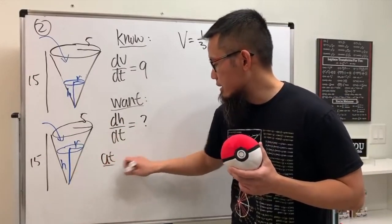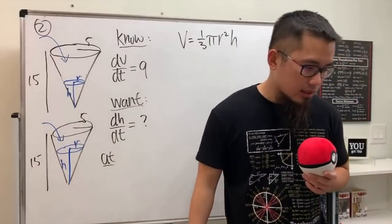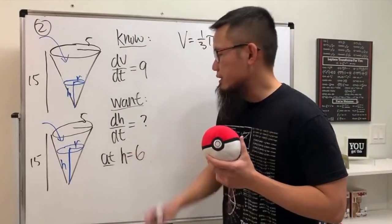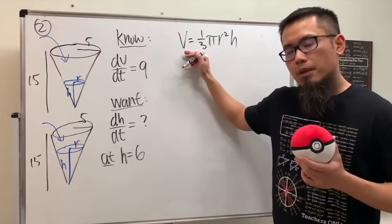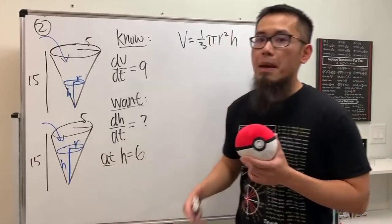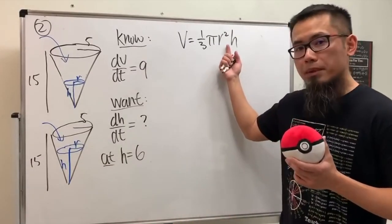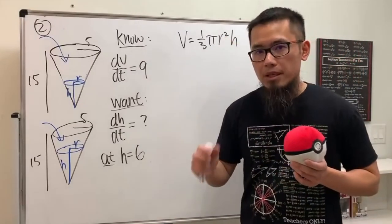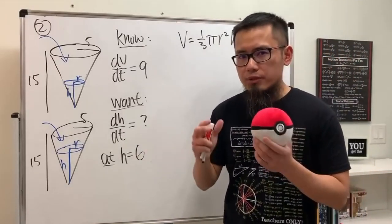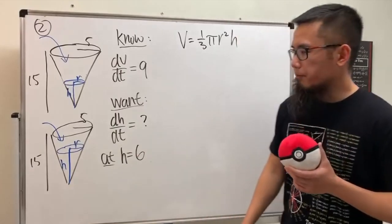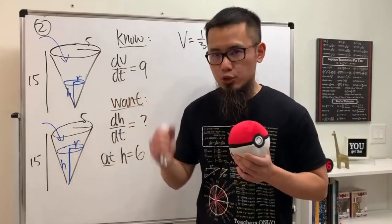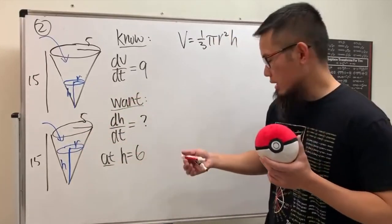We want dh/dt at the instance when the water is 6 feet deep, so when h = 6. We could differentiate directly using the product rule on r and h, but we can simplify by using similar triangles to eliminate one variable. That's the typical approach for cone problems, even though the product rule method also works.